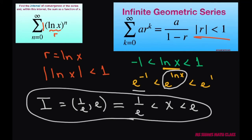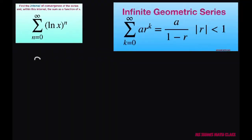Now we have to find the sum. Remember this is our r and we are going to use this formula. So to do that we are going to write the sum equals a divided by 1 minus r. And that is going to be 1 divided by 1 minus ln of x.